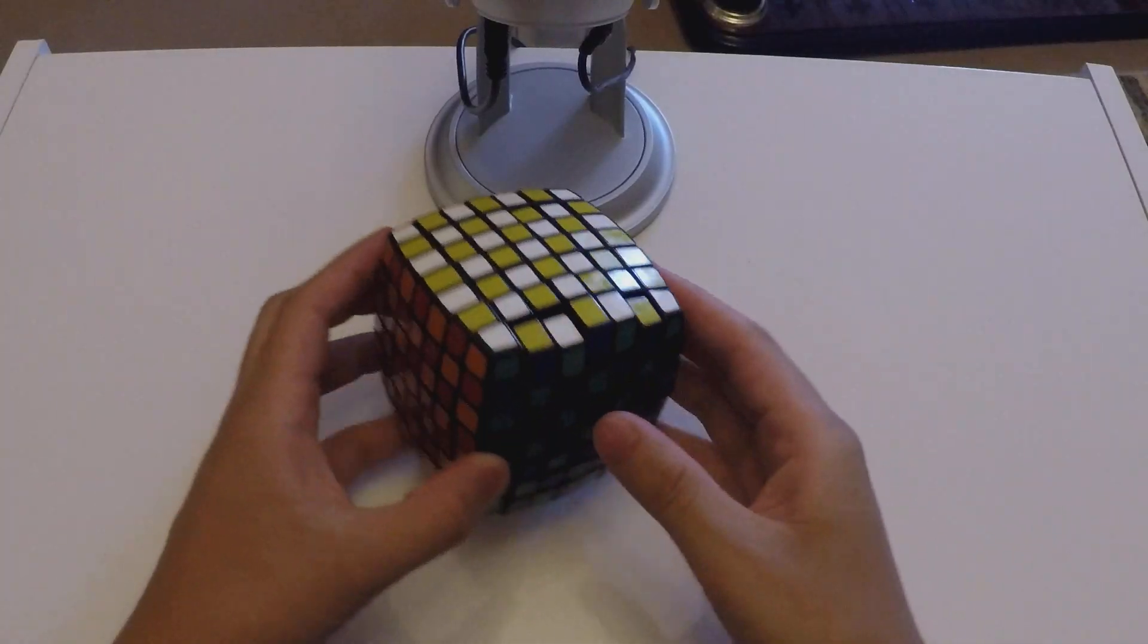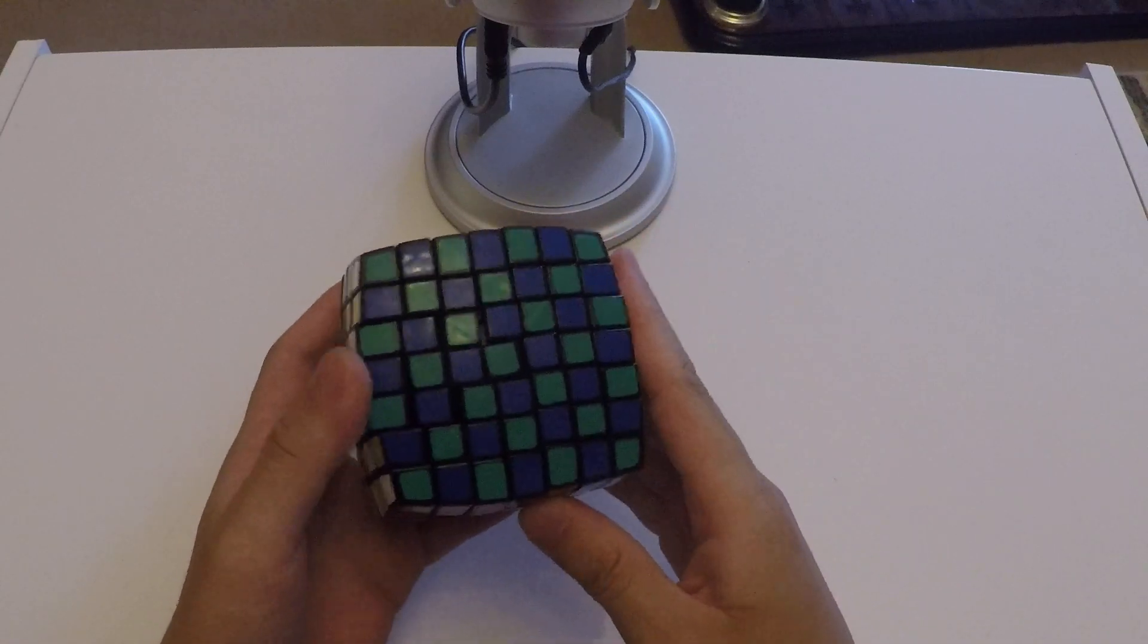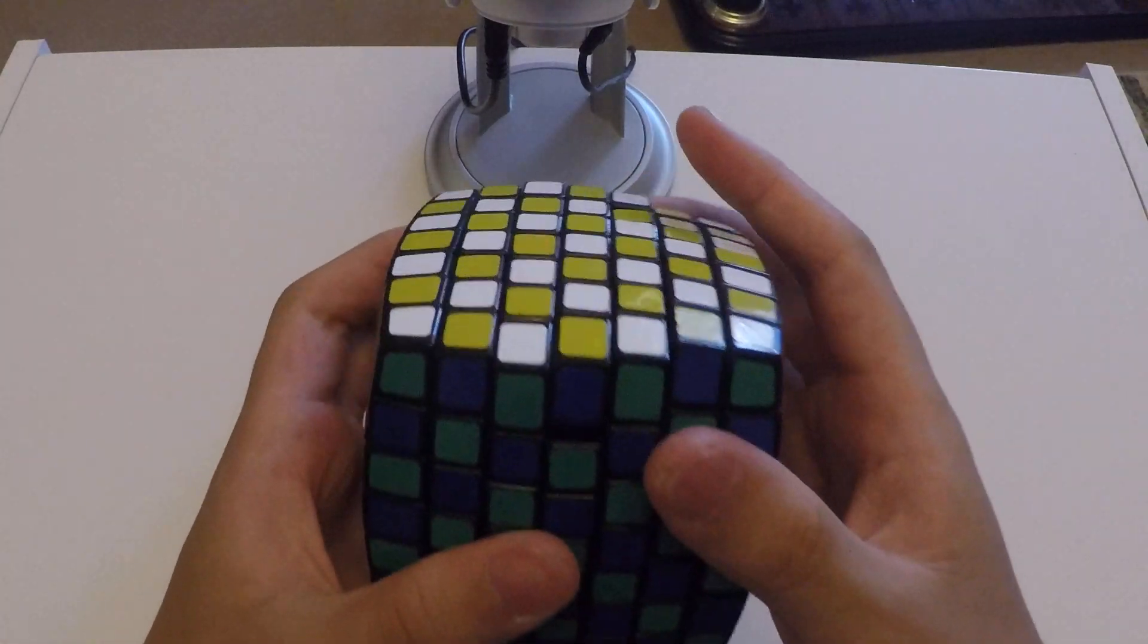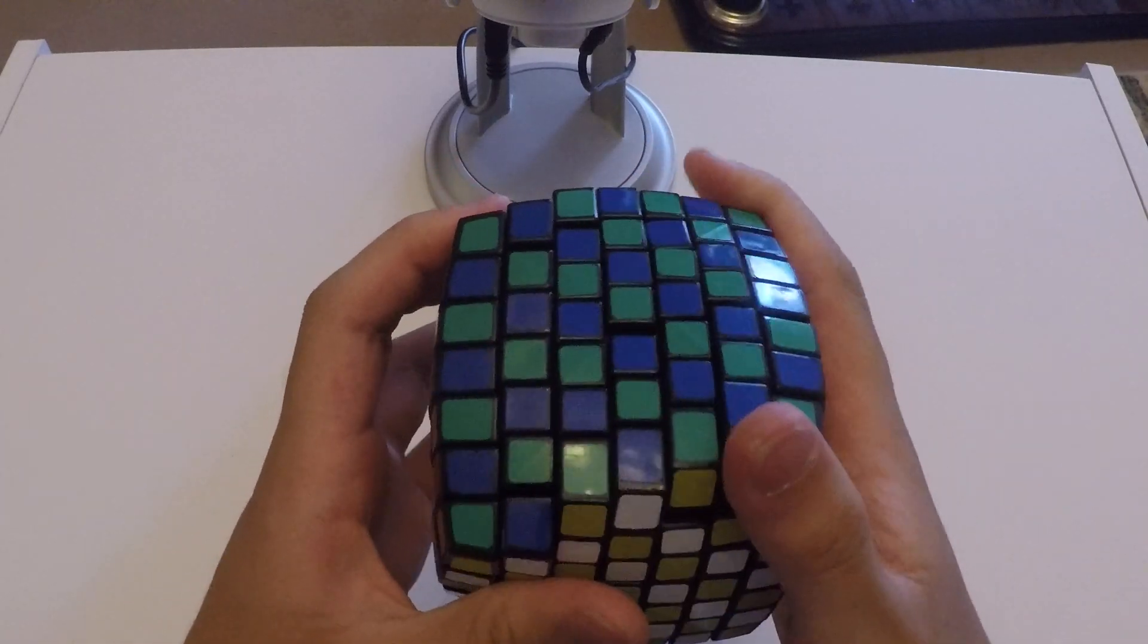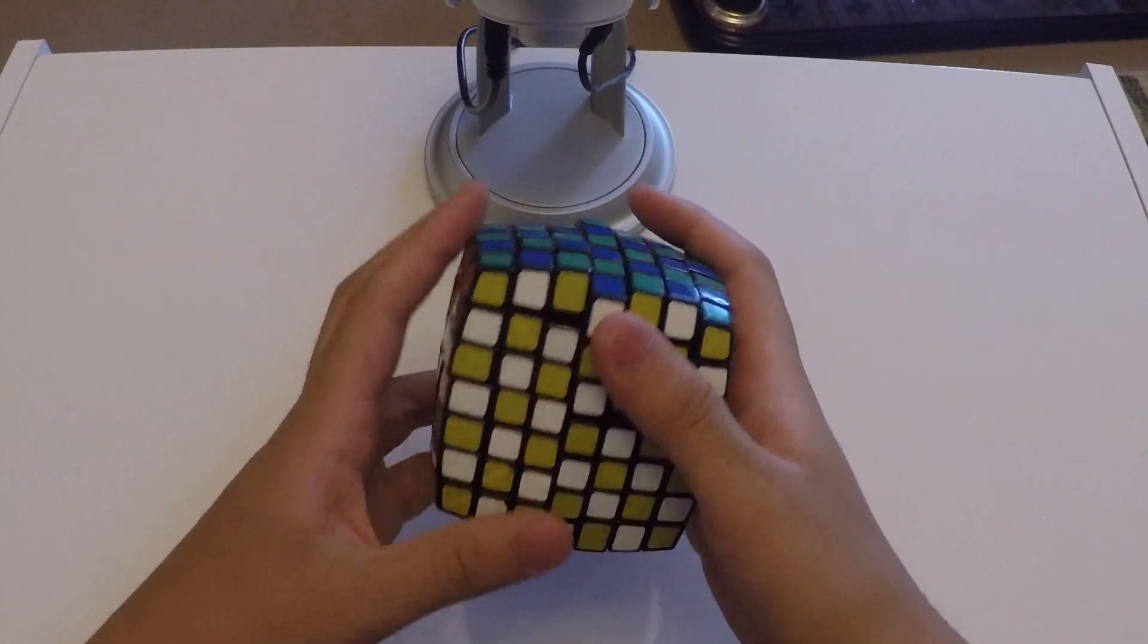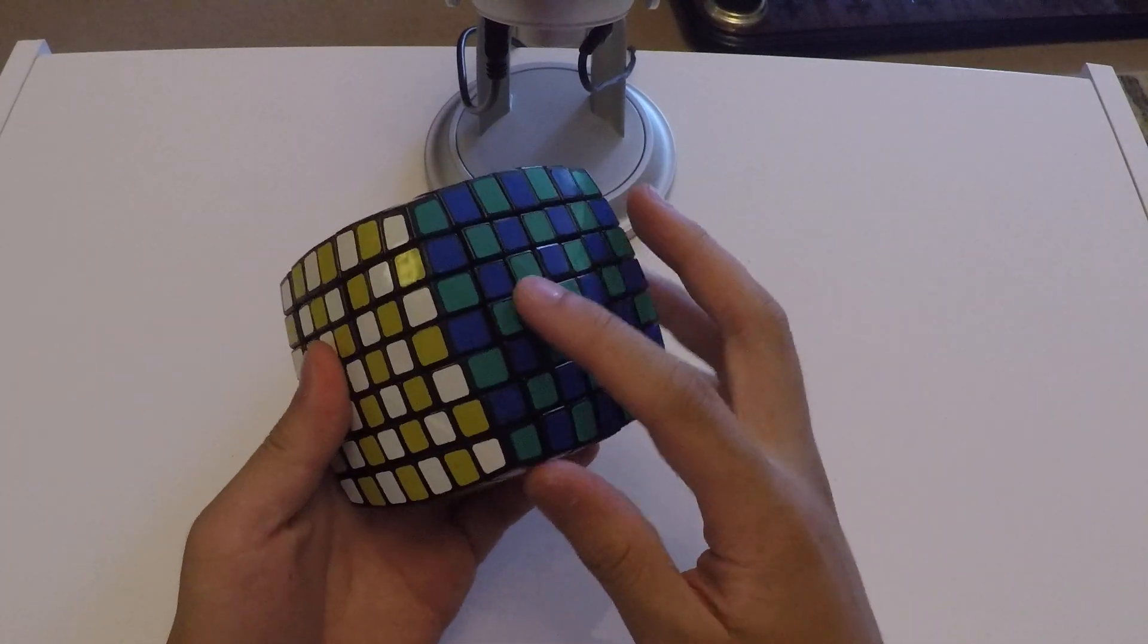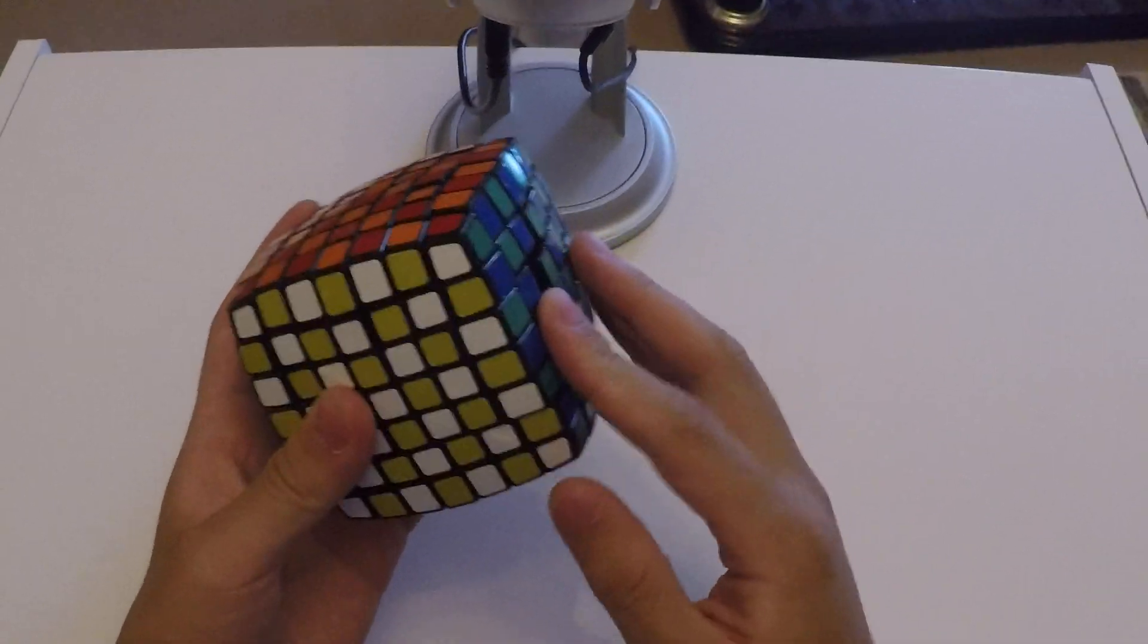Now coming in at number three we have the YJ bread 7x7. Yeah, that's literally what it was called when I bought it online. As you can see the pieces are a little bit loose and flimsy, and I don't really want to turn this because it feels like it's about to break apart at any moment.